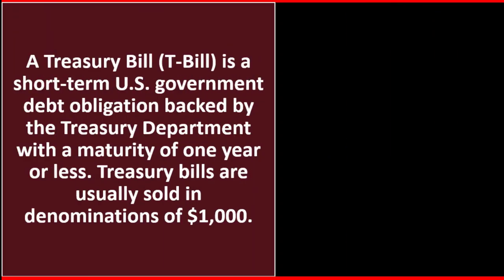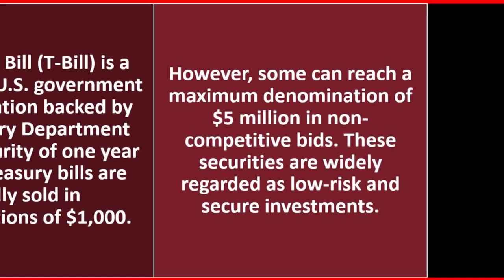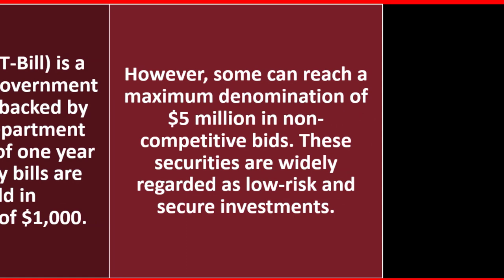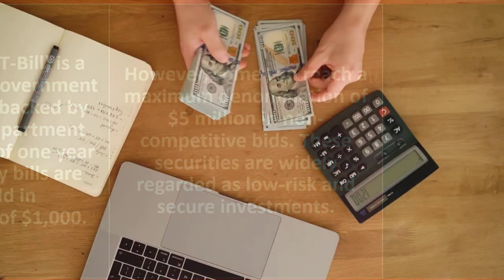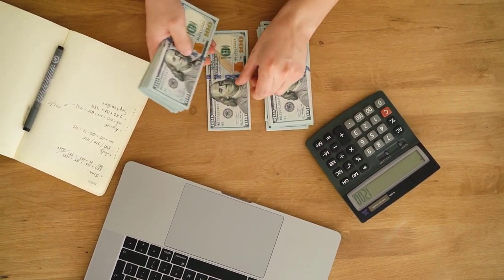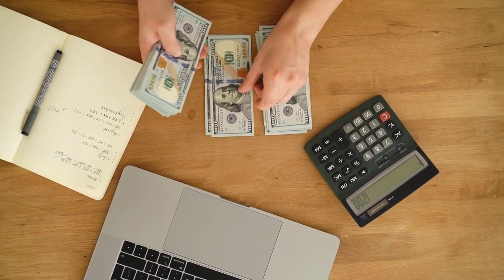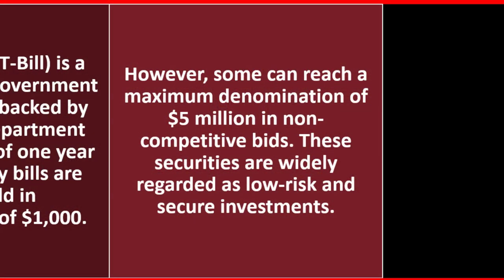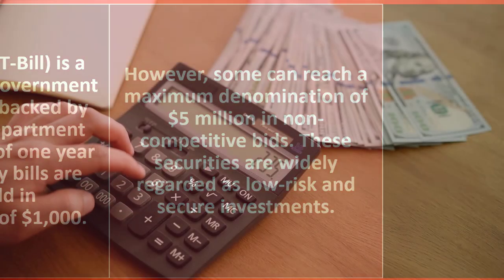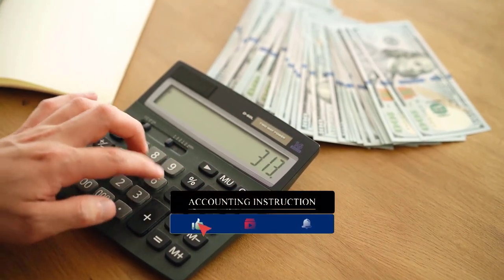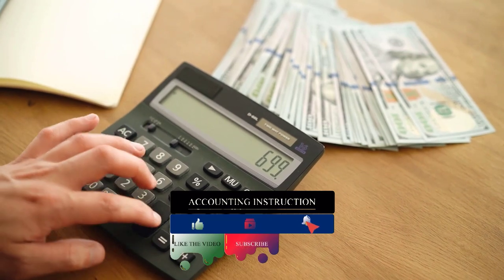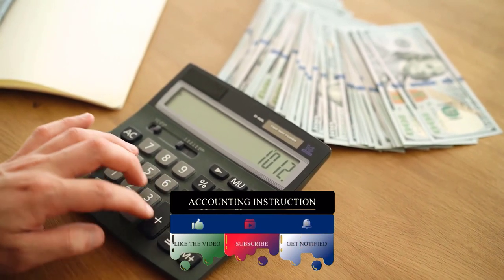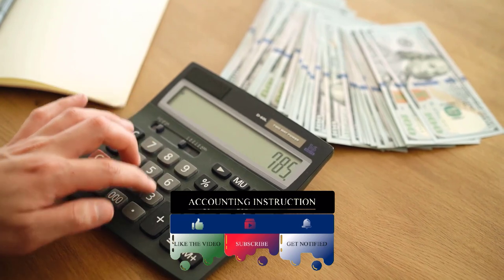Treasury Bills are usually sold in denominations of $1,000. However, some can reach a maximum denomination of $5 million in non-competitive bids. These securities are widely regarded as low-risk and secure investments. One of the least risky types of investments you can have would be the Treasury Bill, due to the fact that they are short-term, so your money will be freed up in a short period of time.